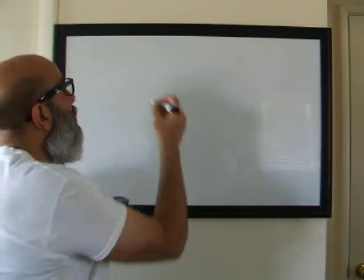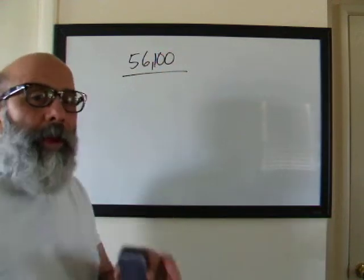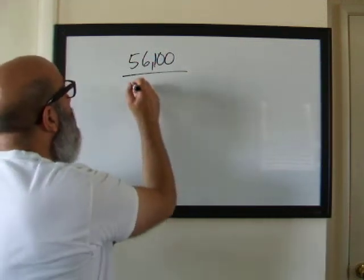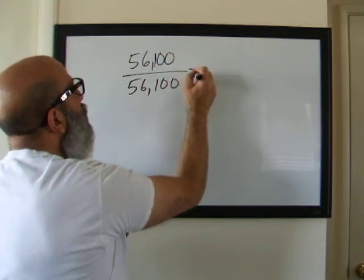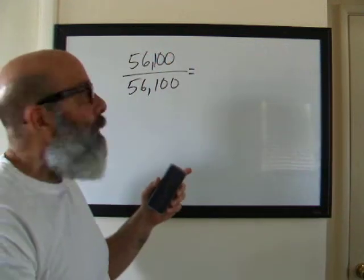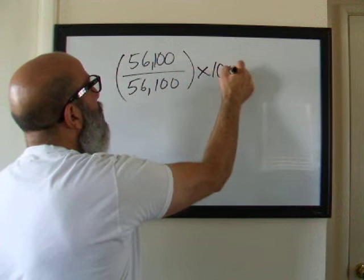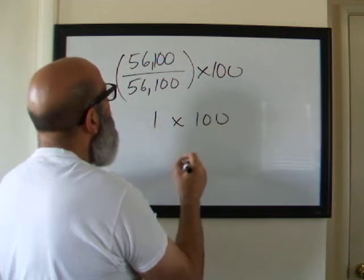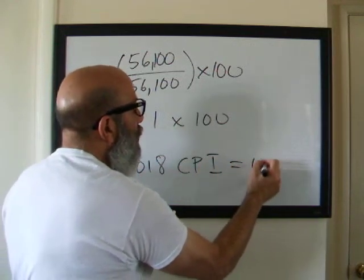So CPI for 2018 was $56,100. So the way you get CPI is you take CPI for a given year, so like $56,100 and you divide it by whatever the base year is. In this case, the base year for 2018 is $56,100. So we know that anytime the numerator and the denominator are the same, it's going to be 1. I should just to make it like the book, times 100. So we're going to have 1 times 100.